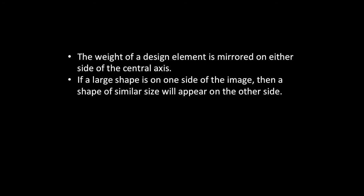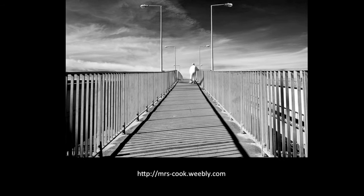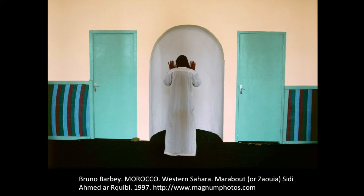Then we've got symmetrical balance, where the image is mirrored on either side of the central axis — so if there's a large shape on one side of the image, there'll be a shape of similar size on the other side. This is a good example: if you were to draw a line down the middle of that image you would have that symmetrical balance, and except for the man, everything is pretty much the same on either side. Here the same applies — if we put a line through the middle of that image it's very symmetrically balanced on either side.